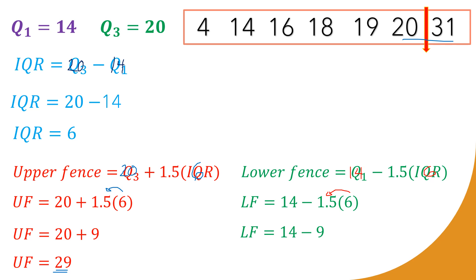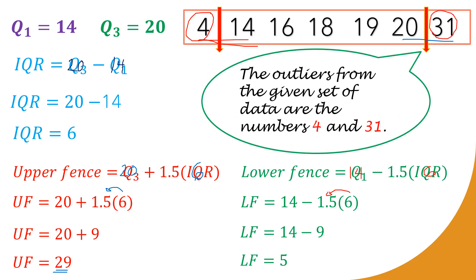Subtracting 9 from 14, our lower fence is 5, which is in between 4 and 14 on our data set. The numbers that appear outside or beyond our fences are 4 and 31. Therefore, we conclude that the outliers from the given set of data are 4 and 31.